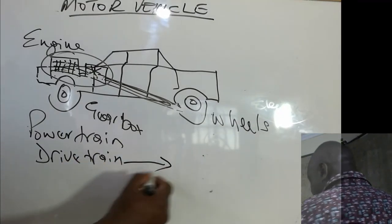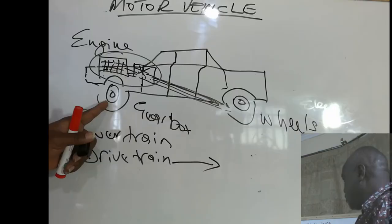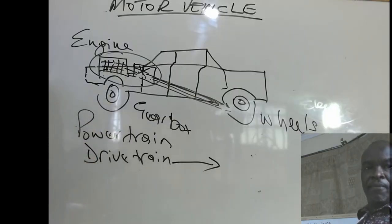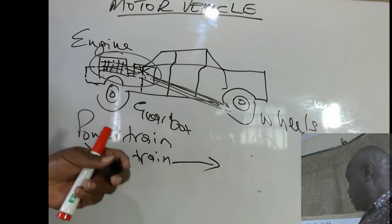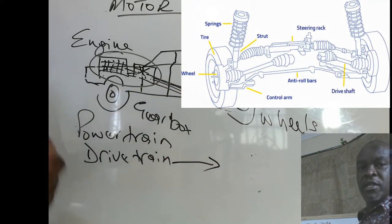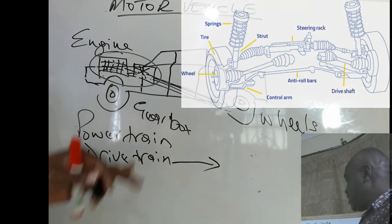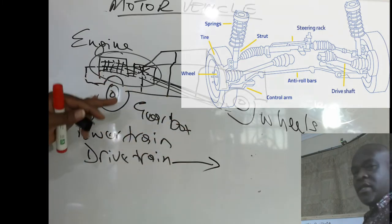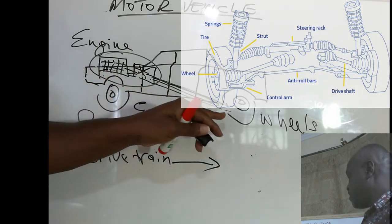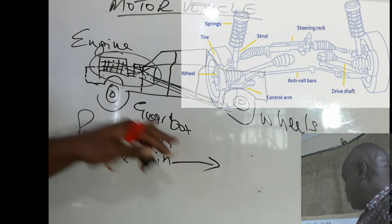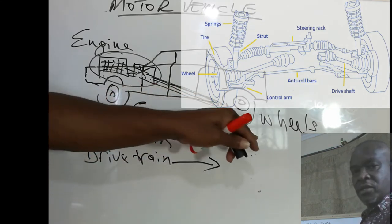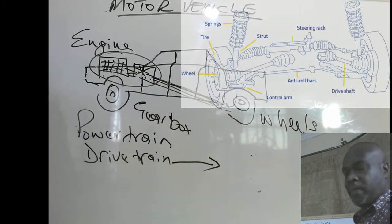The drive train basically, suspension is the structure that holds together the wheels in front and at the back. The suspension includes things like your shock absorbers, it includes things like the ball joints, it includes your steering rack, all those things. When a mechanic says my car's suspension has a problem, it is to do with the wheels and how the wheels are connected to the motor vehicle. So the drive train has the wheels, the suspension, and the drive shafts.